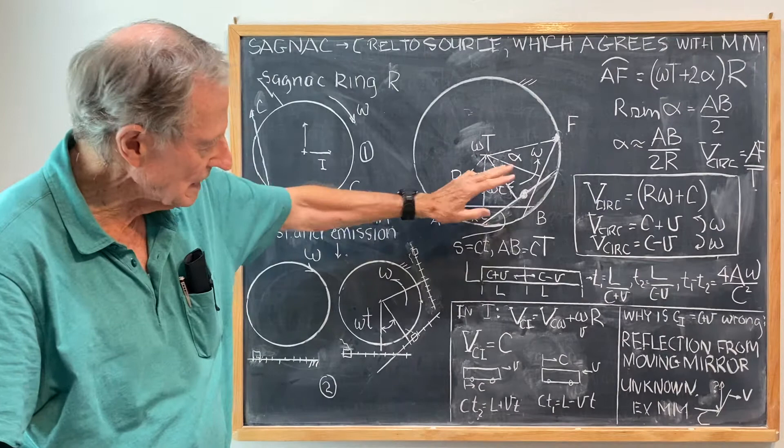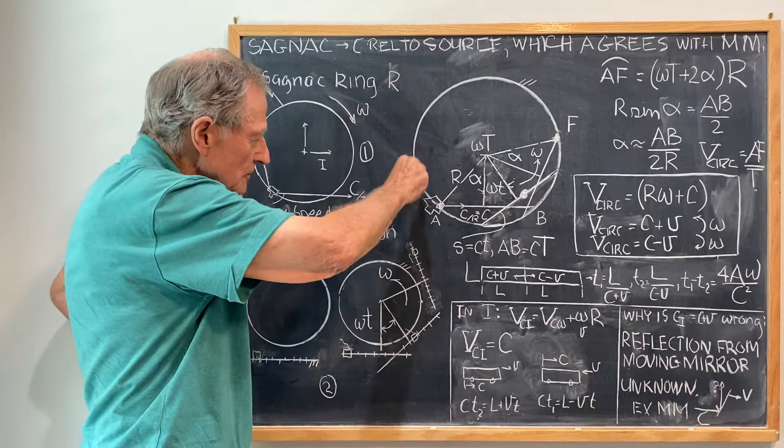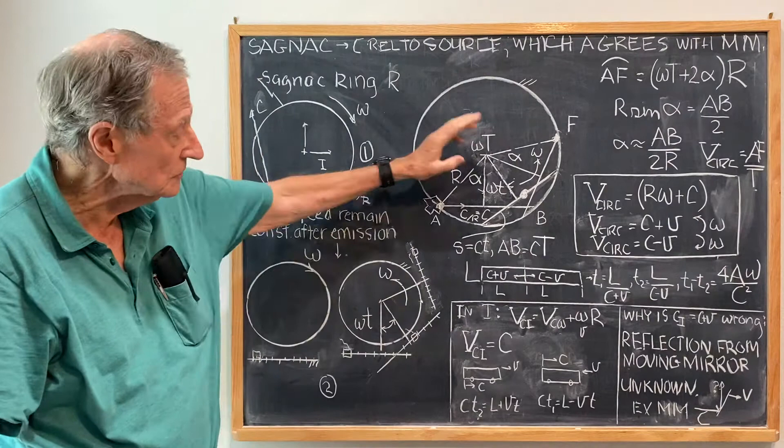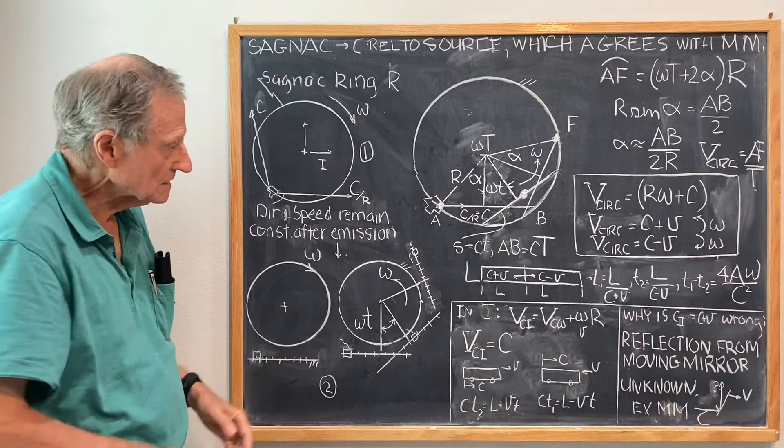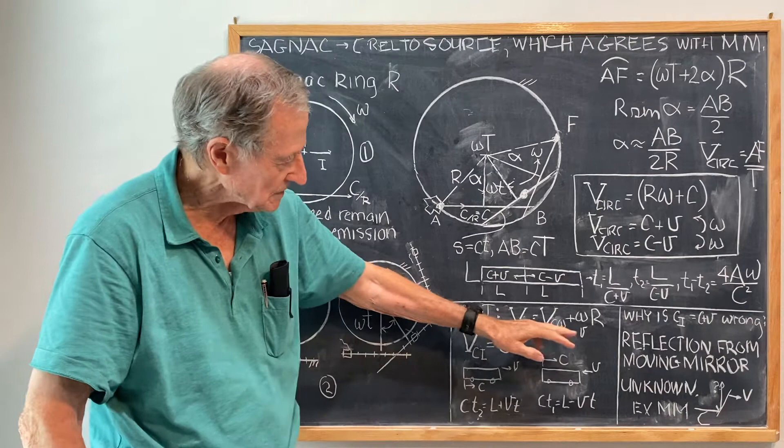Now, having found the relative circumferential velocity relative to the ring, you can then find what the circumferential velocity is in the inertial frame. And I haven't derived that here, but that is,